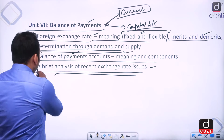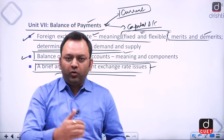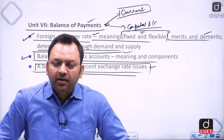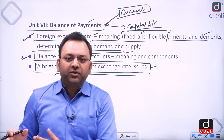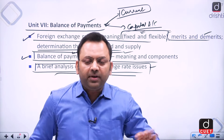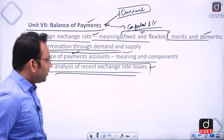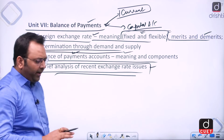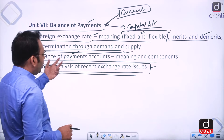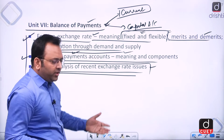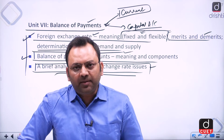In the context of the current demand-supply mismatch and outflow of money from India to global markets, we will examine exchange rate issues. Unit seven will cover BOP accounts, fixed exchange rates, devaluation, depreciation, and concepts like convertibility to understand the concepts better.